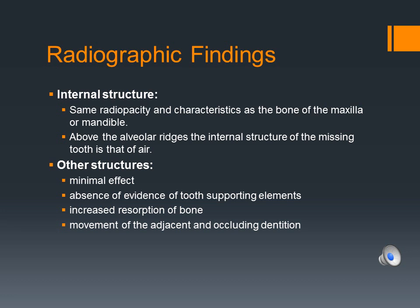Missing teeth have minimal effect on other structures, if any. The absence of teeth leads to the absence of bone-supporting elements including the periodontal ligament space and nutrient canals. Missing teeth may lead to increased resorption of bone in the affected area. The absence may also result in movement of adjacent and occluding dentition toward the vacant space, resulting in tipping or supereruption.